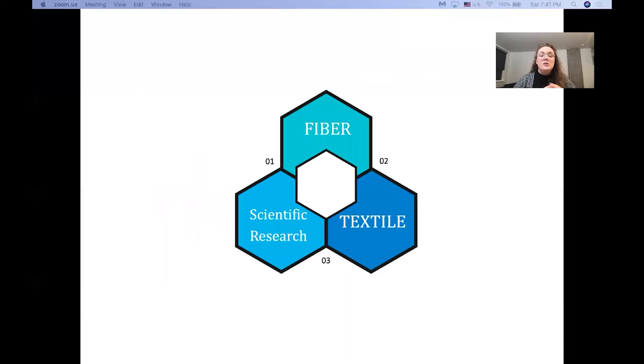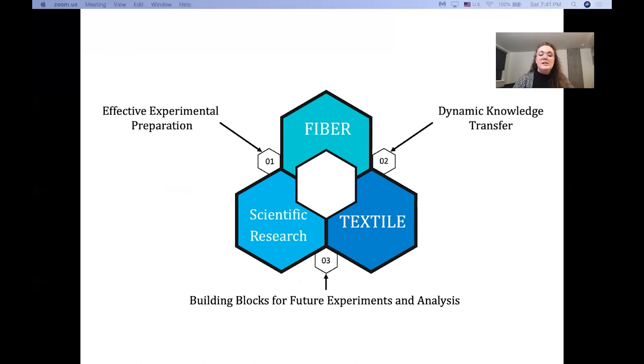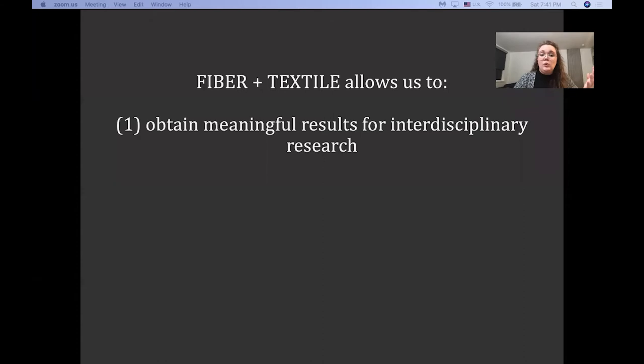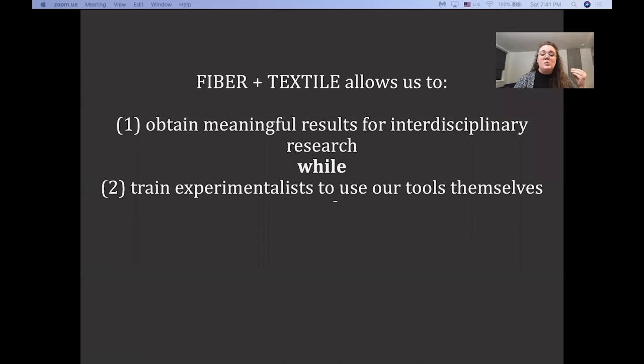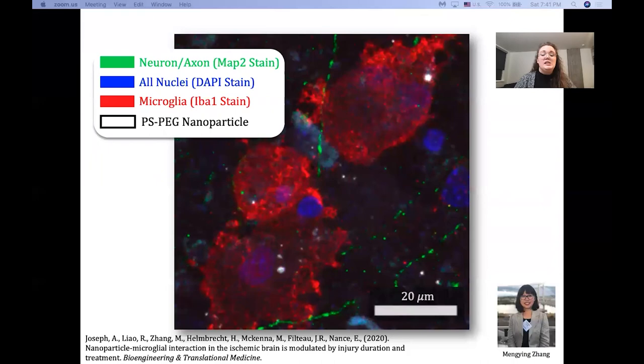So this all fits into this three-piece framework for us where scientific research fits with FIBER via effective experimental preparation, FIBER fits with TEXTILE in education via dynamic knowledge transfer, and TEXTILE supports our scientific research by providing building blocks for future experiments and analysis. All three of these things are so important that they allow us to obtain meaningful results for interdisciplinary research while training experimentalists to use our tools and freeing up our data scientists for future expansion.